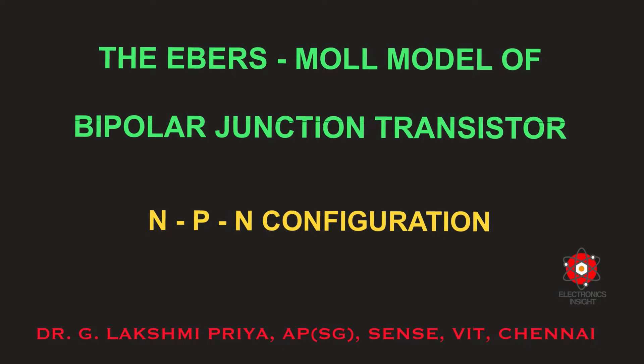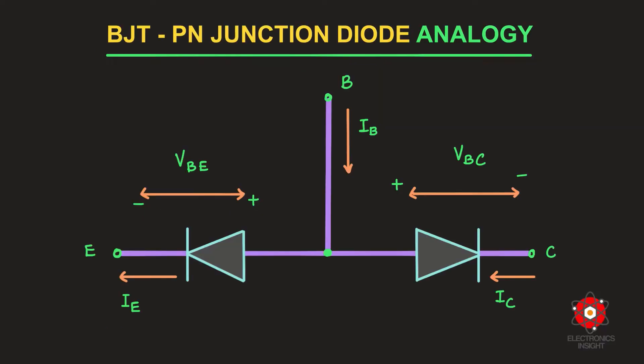Welcome to a new video on the Ebers-Moll model of the bipolar junction transistor. As we know, the BJT can be considered in terms of two different configurations: one as NPN and the other as PNP. In this video, we are going to concentrate on the Ebers-Moll model of the NPN bipolar junction transistor.